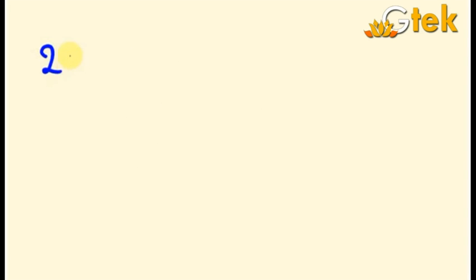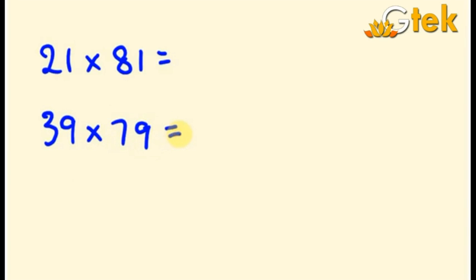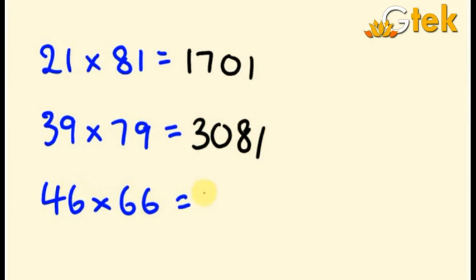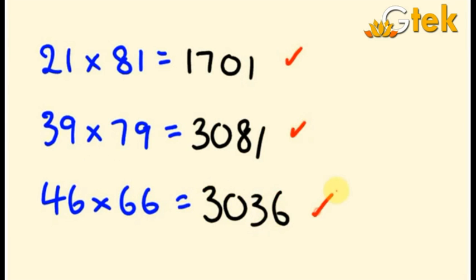Now I am going to take further questions: 21 into 81, 39 into 79, and 46 into 66. So 2 into 8 is 16 plus 1 is 17, and 1 into 1 is 1. For 39 into 79: 3 into 7 is 21 plus 9 is 30, and 9 into 9 is 81. For 46 into 66: 4 into 6 plus 6 is 30, and 6 into 6 is 36. Thus I found out the answers.